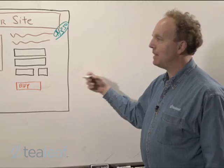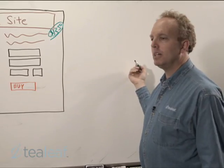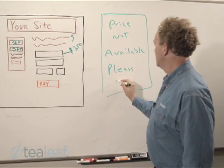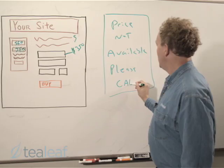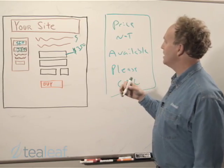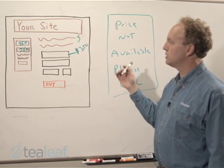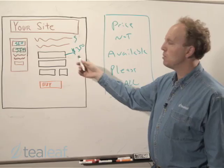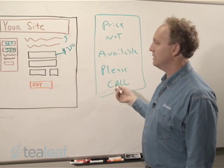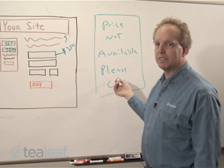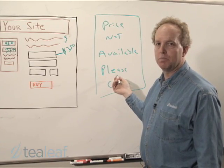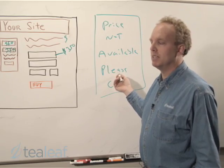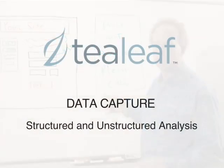I was happy, so I said I was going to pick that flight. I hit buy, and then I got back a pricing error — price not available, please call. With T-Leaf, you get visibility not just to what the user asked to do, but what actually happened — that their transaction was interrupted by what looks to be an error message: the price was no longer available.